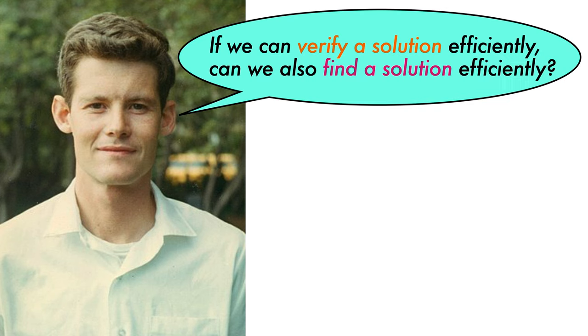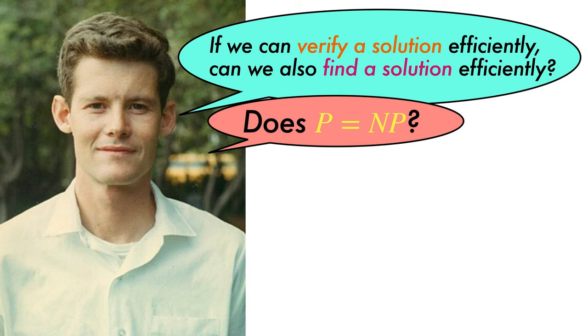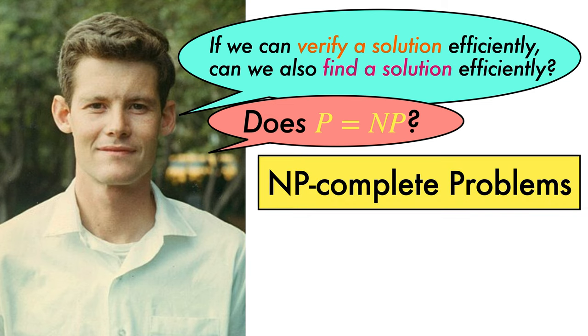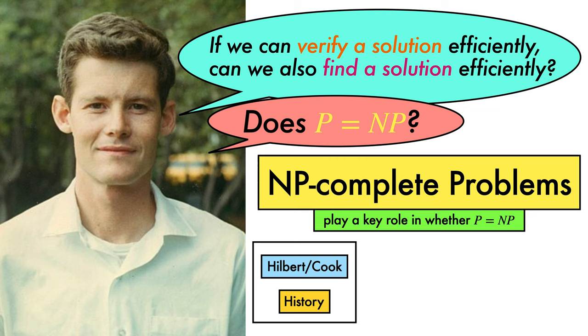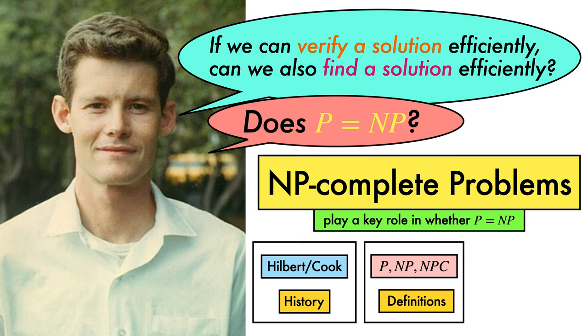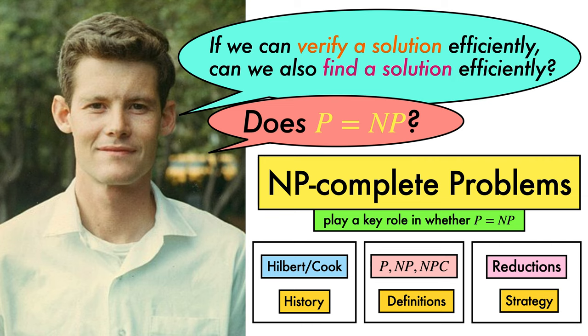In 1971, Stephen Cook authored a seminal paper that laid the groundwork for a sacred question: if we can verify a solution to a problem efficiently, can we also find a solution to that problem efficiently? Or, in computer science parlance, does P equal NP? In this video, we will describe the class of NP-complete problems which play a key role in tackling this tantalizingly untackled question of whether P is equal to NP. We'll look at some of the history behind these problems, how complexity classes are defined, and a strategy for determining which kinds of problem are difficult to solve efficiently.